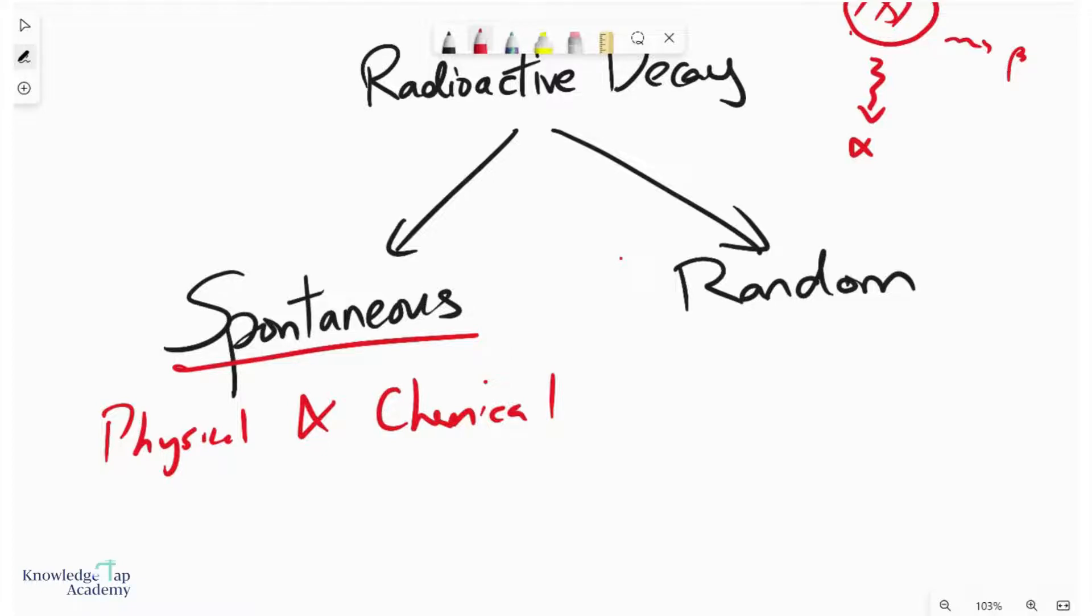What does it mean to be random? If I have a sample of uranium, there will be many uranium nuclei in that sample. The idea of randomness is that there is no way to predict which one of these nuclei will be the next to decay.